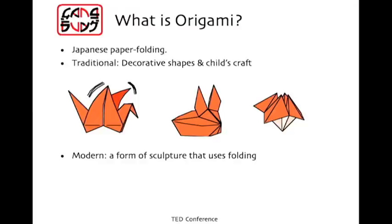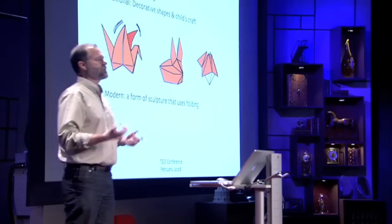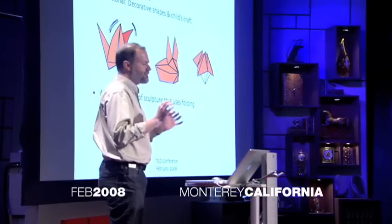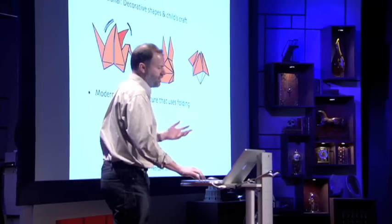So let me start. What is origami? Most people think they know what origami is. It's flapping birds, toys, cootie catchers, that sort of thing. And that is what origami used to be. But it's become something else. It's become an art form, a form of sculpture. The common theme, what makes it origami, is folding, is how we create the form.